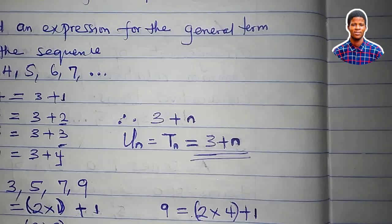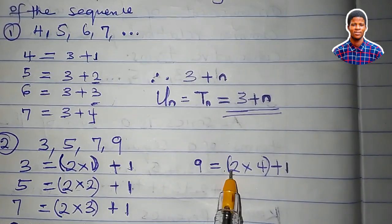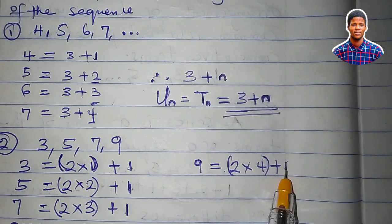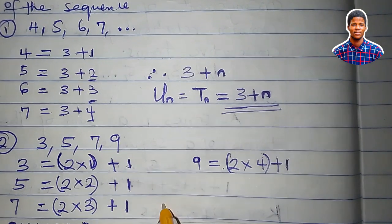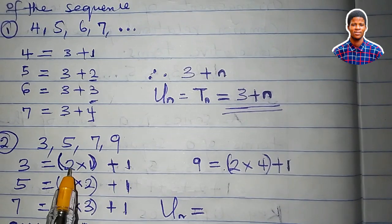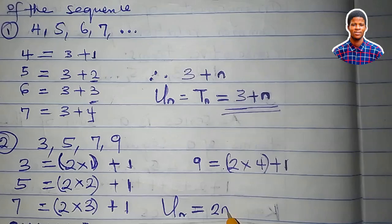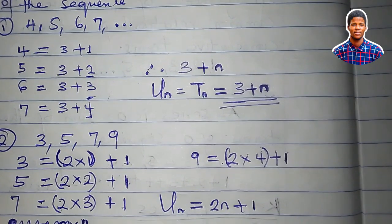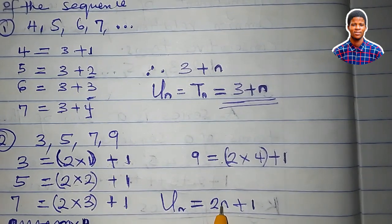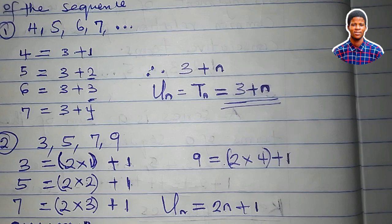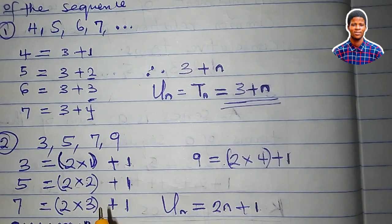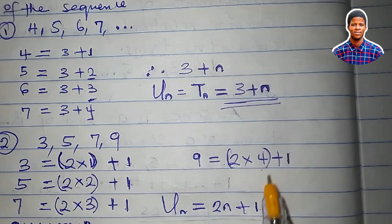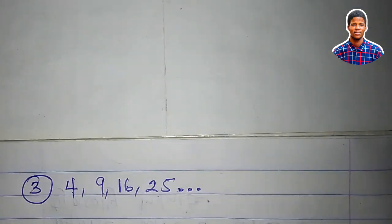The values 2 and 1 are constant throughout — they don't change. What is changing is 1, 2, 3, 4, which represents n. So we replace those with n, and we can write the nth term u sub n as 2n plus 1. To verify: first term is 2 times 1 plus 1 equals 3; third term is 2 times 3 plus 1 equals 7; fourth term is 2 times 4 plus 1 equals 9. To determine the nth term of a sequence, you must inspect the sequence carefully.